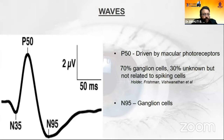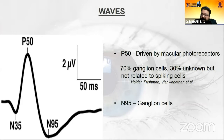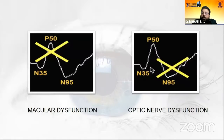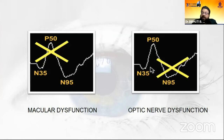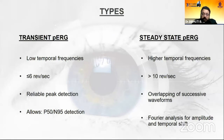There are two waves in pattern ERG: a P50 positive wave and an N95 negative wave. The P50 is driven by macular photoreceptors and the N95 by retinal ganglion cells. So in a macular dysfunction, P50 would be abnormal, and in optic nerve dysfunction, N95 will be abnormal — and later, P50 may also become abnormal.